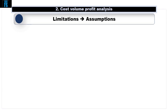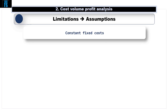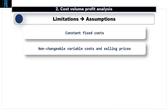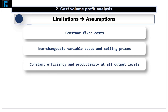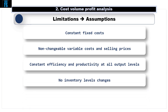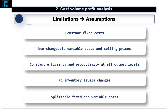The final area to cover is the limitations of these CVP techniques. All methods assume that fixed costs are constant at all output volumes with no stepped fixed costs, and that variable costs and selling prices do not change as output and sales volumes change. This implicitly assumes constant efficiency and productivity with no learning curve effect or price-demand relationships. We also assume that whatever we produce we sell, so there are no changes in inventory levels. Finally, there is an assumption that fixed and variable costs can be clearly split and that there are no semi-variable costs within the business.